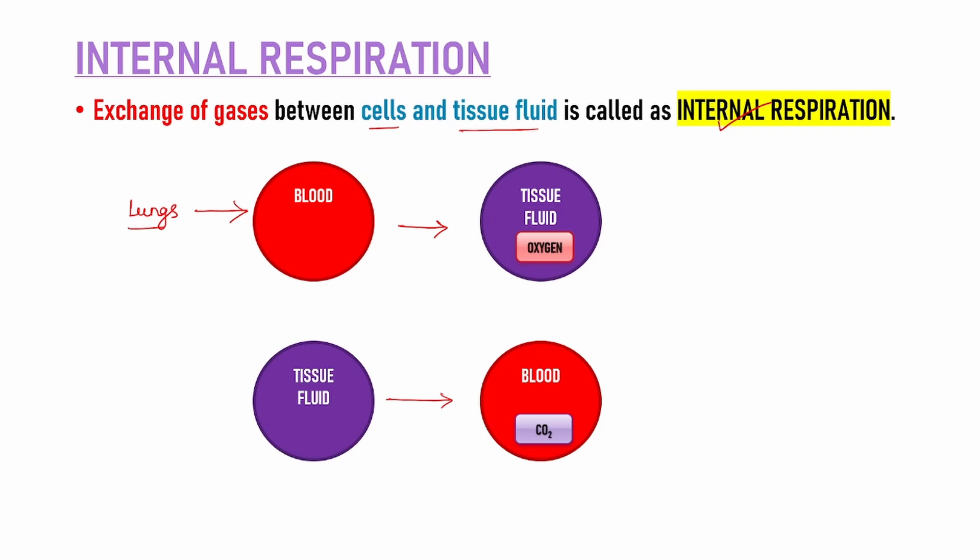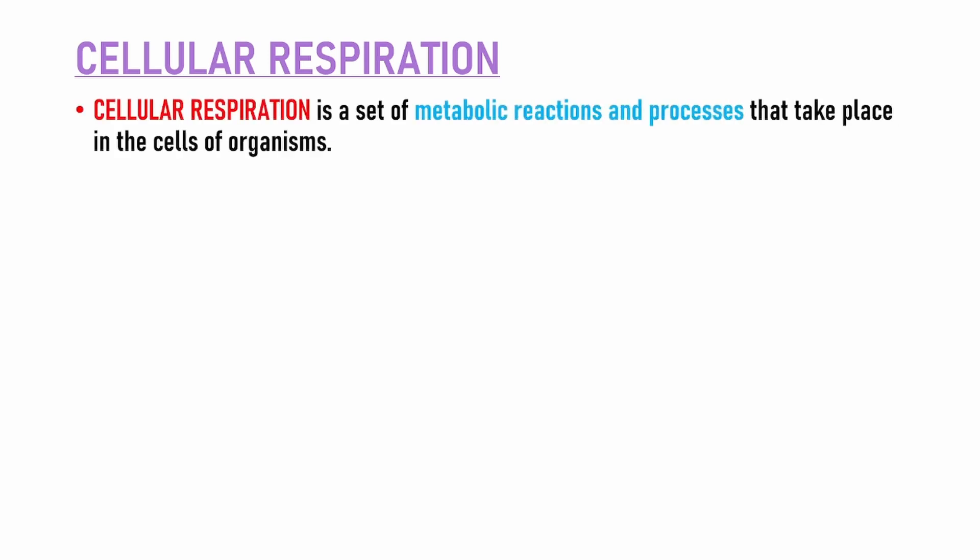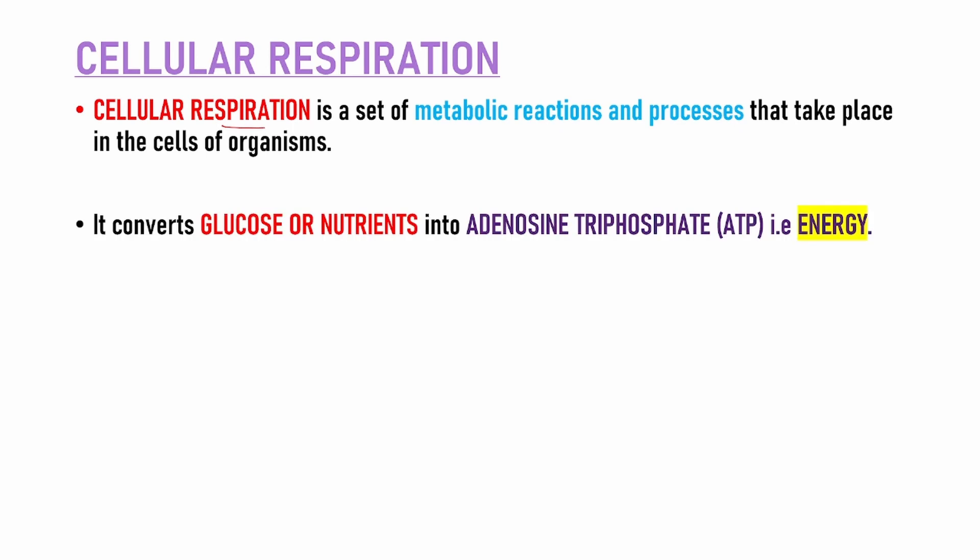Cells ya tissue fluids ke beech ka jo exchange of gases hota hai, usse hum internal respiration kehte hai. Next type of respiration is cellular respiration. Cellular respiration ek set of metabolic activities hoti hai cell ke andar — bhot saare reactions, processes, activities hoti hai cell ke andar. Basically jo bhi food materials humne khaya, usse humara body digest kar dega, usse nutrients cell ke paas pahuncha deta hai. Those nutrients ya phir glucose convert kiya jaata hai into energy packets.